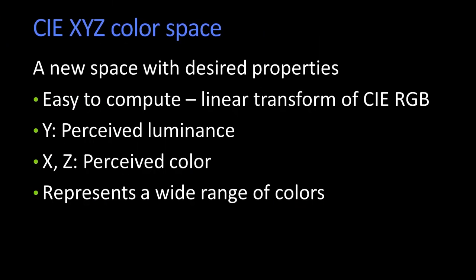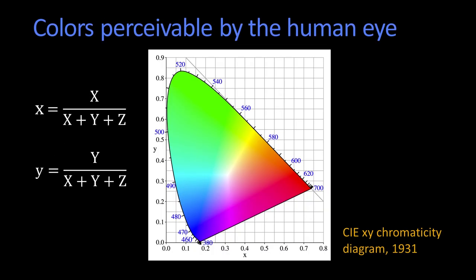You could represent a wide range of colors. In fact, in this diagram I was showing you before, you'll notice down here it says X and Y. It was just X normalized by the sum, and Y normalized by the sum. In some sense, it's for a fixed luminance, taking the luminance out of it.